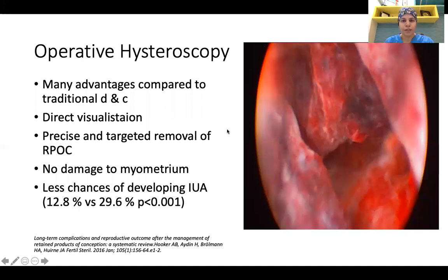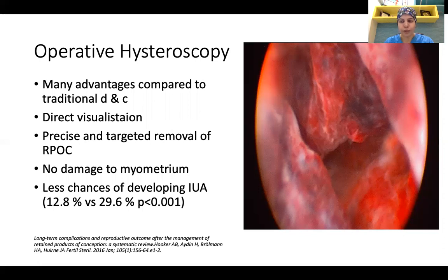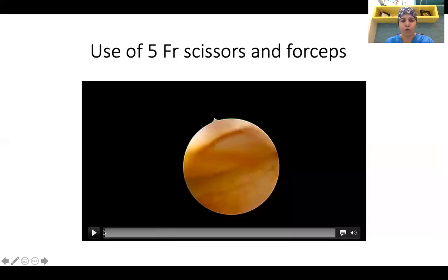What are the advantages of using operative hysteroscopy for retained product of conception? We can see and treat — it is not a blind procedure; there is direct visualization. It allows precise and targeted removal of RPOC as compared to global curettage in D&C, with no damage to the myometrium and less chance of developing intrauterine adhesions: 12.8% versus 29.6% when compared to dilatation and curettage.